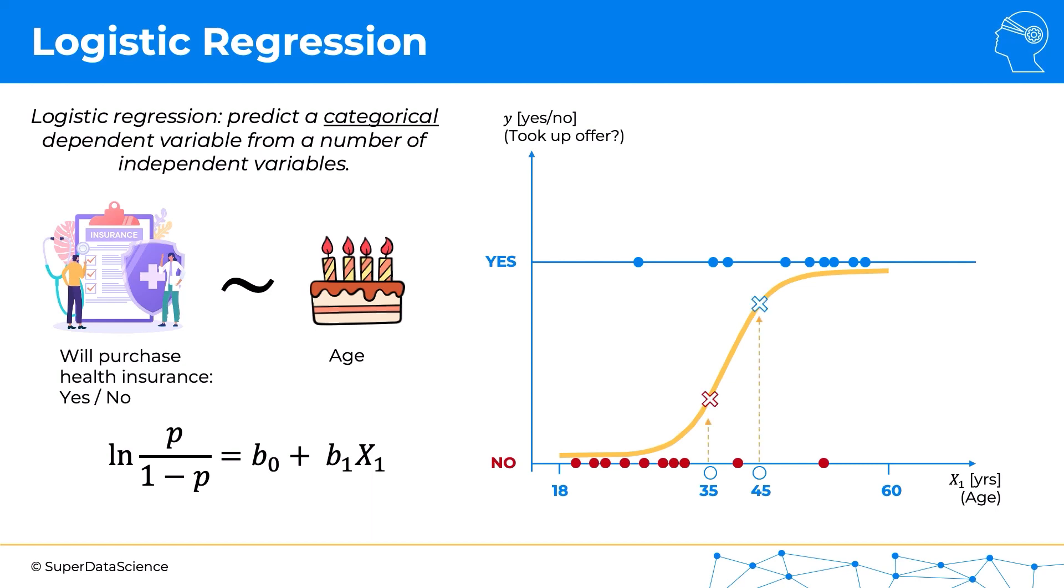What we do is we will need to project these values onto our logistic regression, find out where they fit there, and the logistic regression will give us probability. Everything here is between zero and one. No is a zero, yes is a one, and in between are the probabilities.